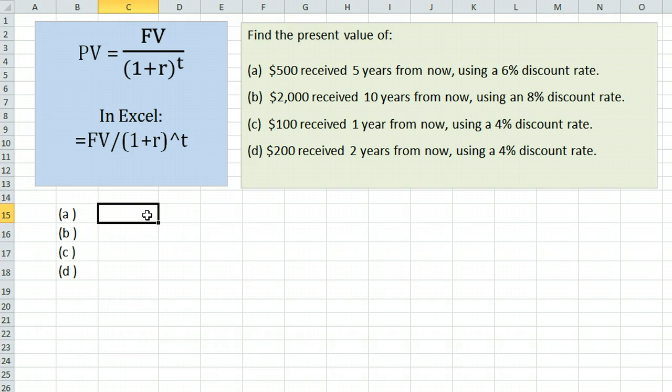To find the present value of a single amount to be received in the future, we will use this formula: present value equals the future value divided by 1 plus r raised to the t, where r is the interest rate expressed as a decimal and t is time. In Excel, to get the exponent, we're going to use the caret symbol, which on most keyboards is shift 6.